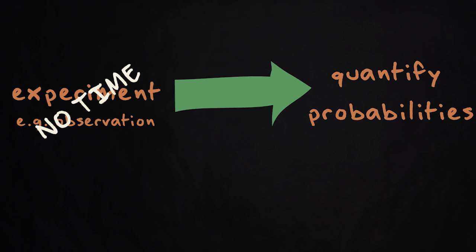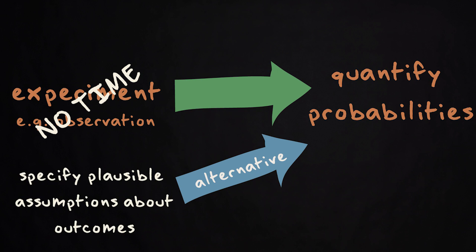But there is no time for that. While the first customer is making up his mind, you would just like to have your answer now. So you resort to the alternative strategy, to specify plausible assumptions about outcomes in the sample space.